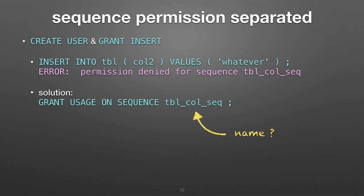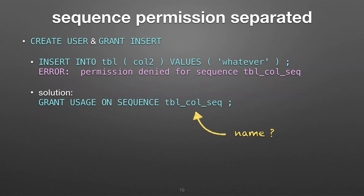That permission is separated. If you create a new user and grant them permission to insert on this table, you would think they could insert on this table. But actually they'll get an error saying permission denied, because they have access to the table but not to the sequence that was created. That separateness is the problem — the sequence is not tied to the table. There's a workaround: you've got to explicitly grant permissions to that sequence as well as to your table. All these problems I'm covering are fixed by the new way.